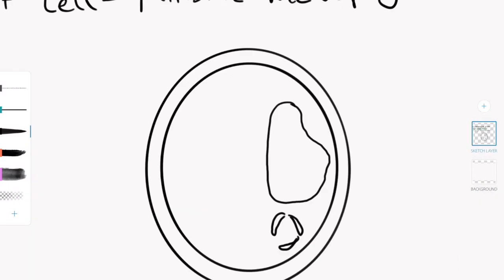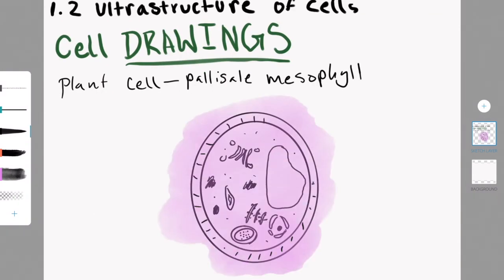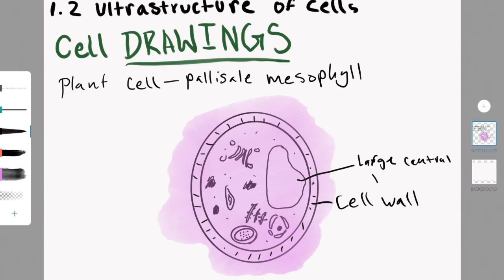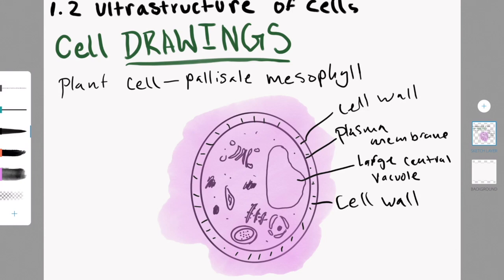The 80S ribosomes are used to synthesize proteins. The S stands for Svedberg, and it's about the speed at which the molecules move. The rough endoplasmic reticulum does protein synthesis and transportation. Those things next to the Golgi apparatus are secretory vesicles. A eukaryotic cell can be anywhere from 10 micrometers to 100 micrometers, which is a lot bigger than the prokaryotic cells.